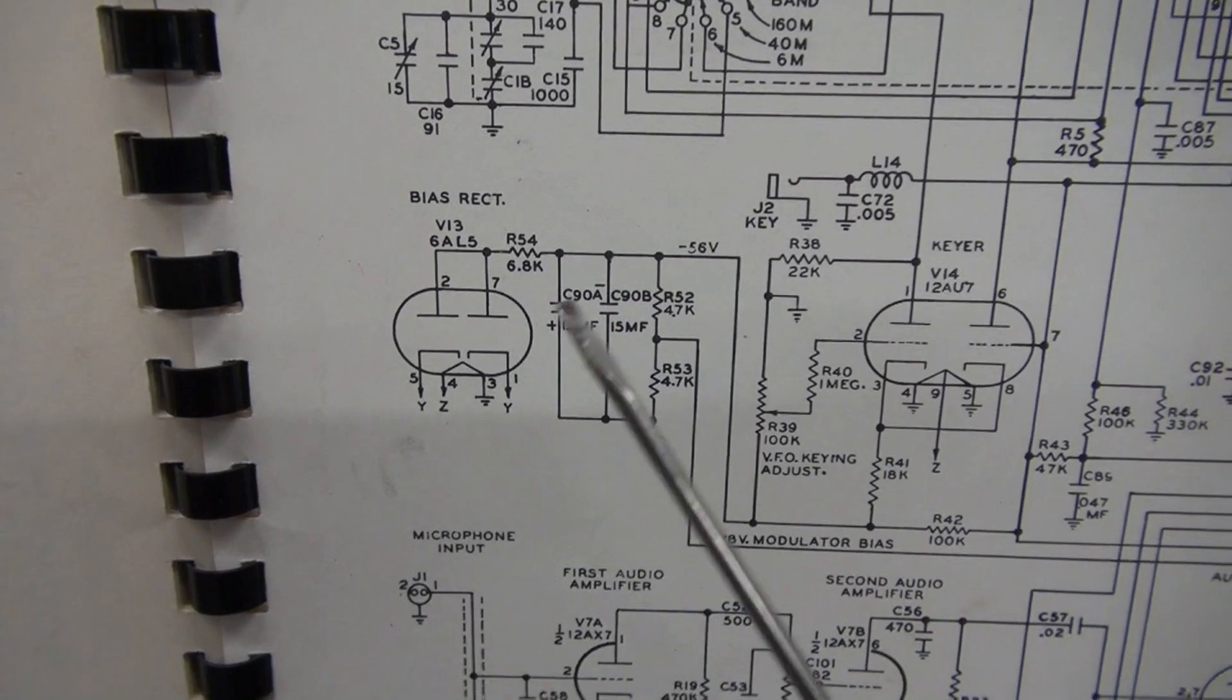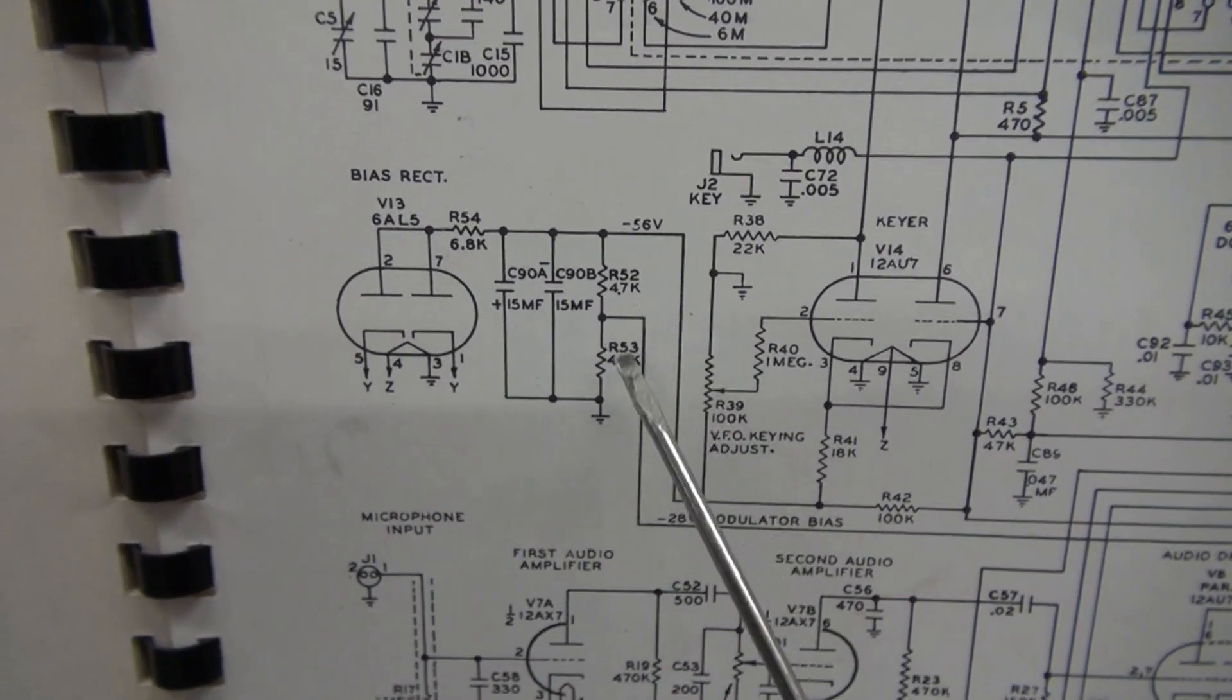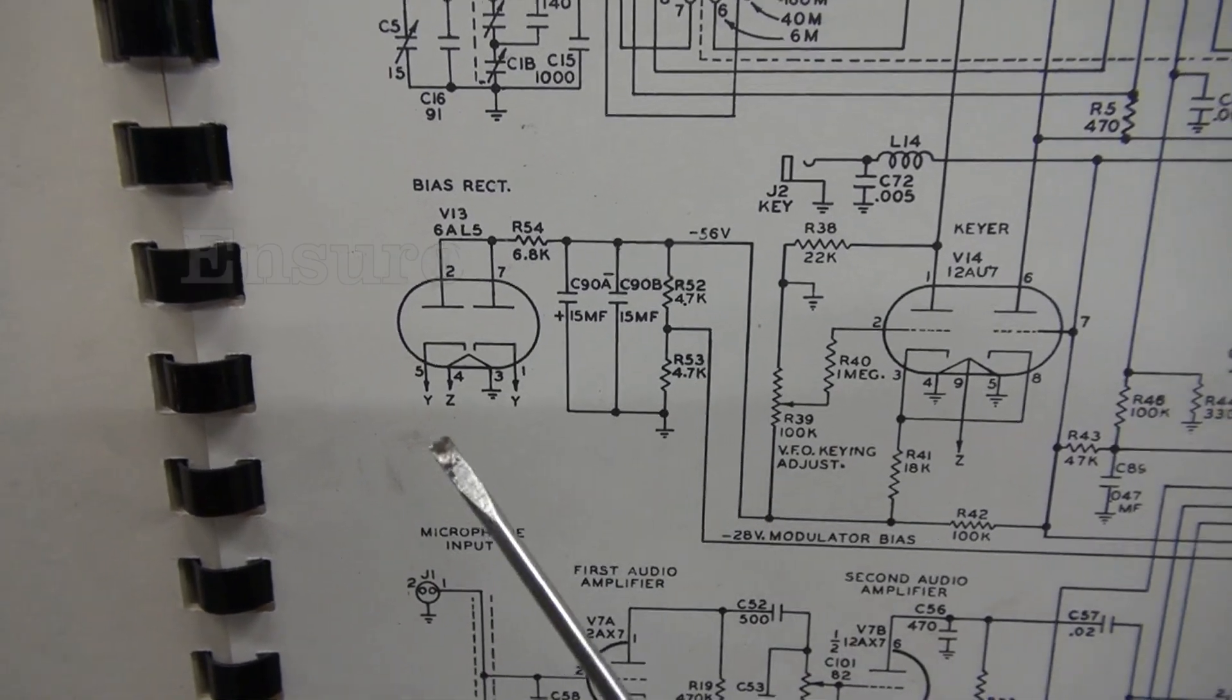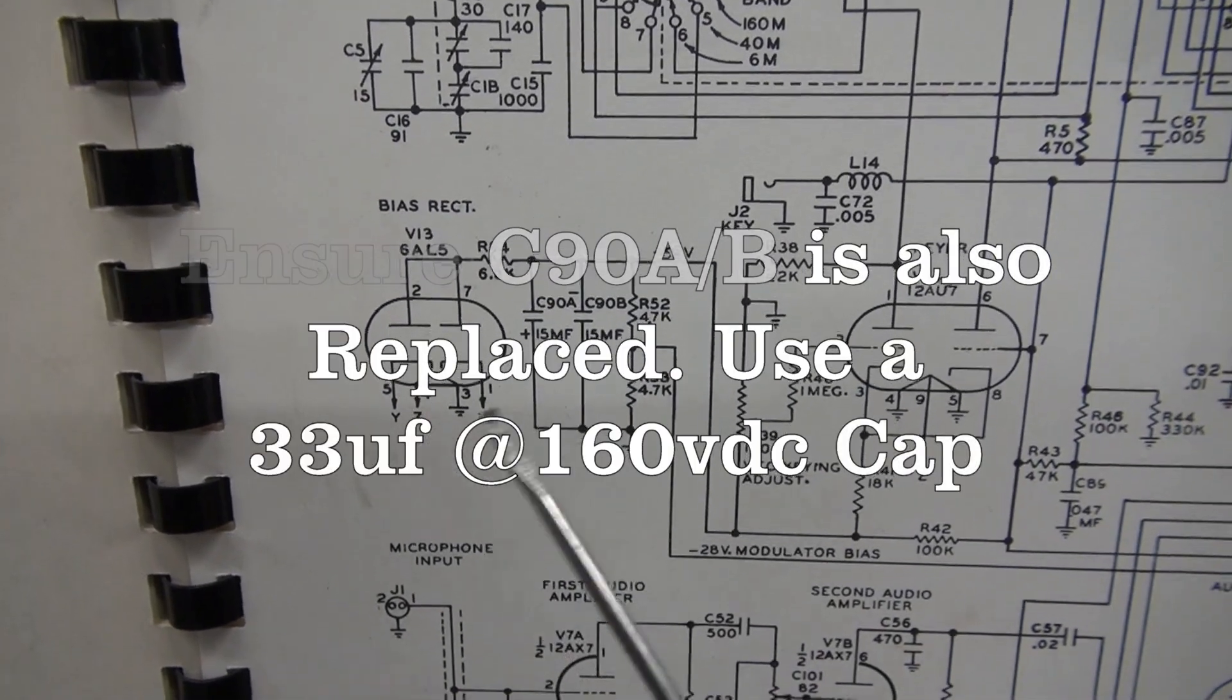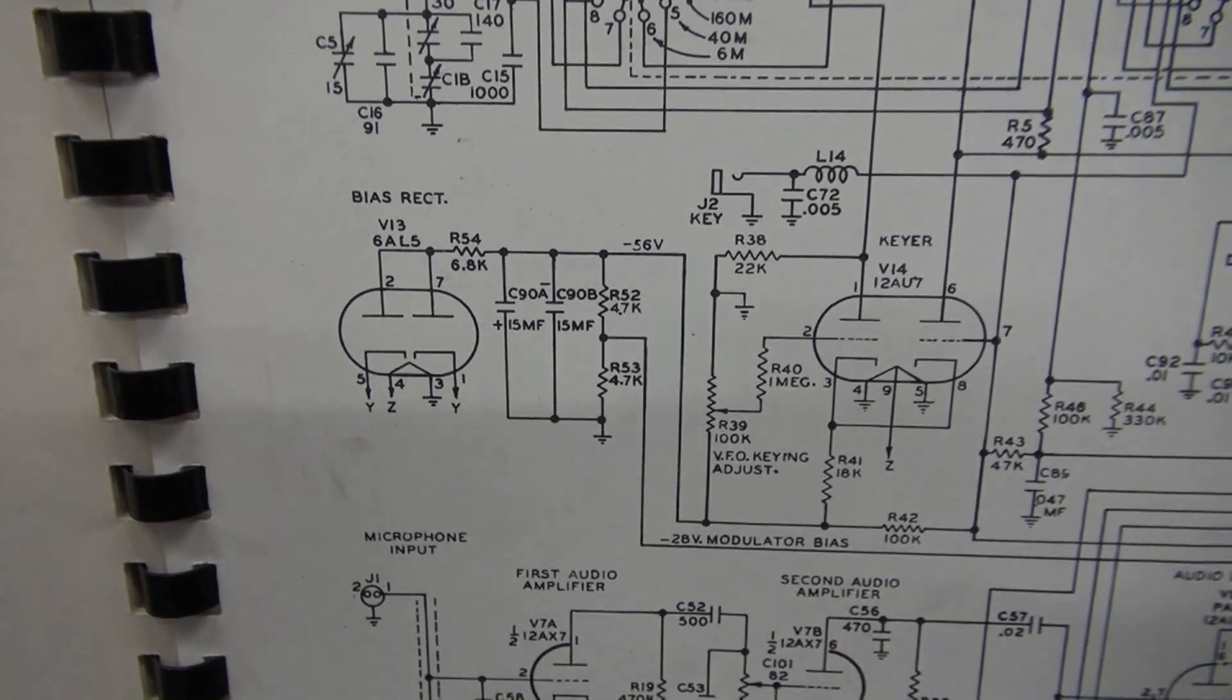Now here's the schematic. You see the bias rectifier. Here are the two 4.7K resistors that I'm talking about. You solid state the bias rectifier and change those resistors and your negative bias would be rock stable!